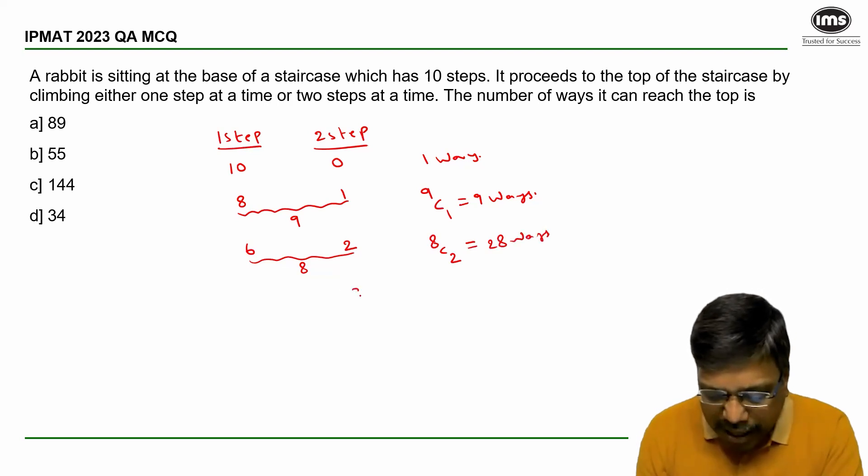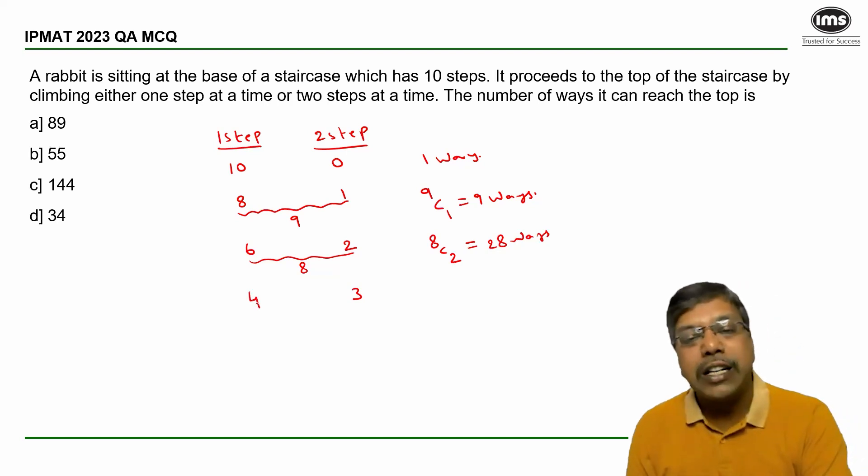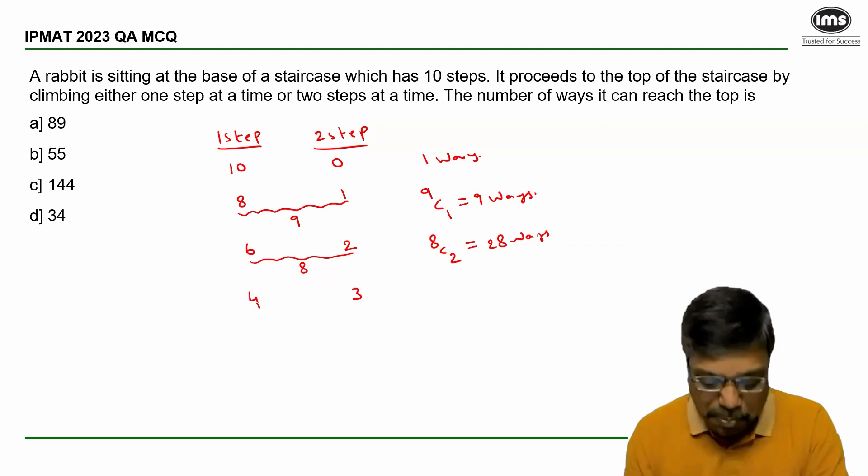Suppose it makes three jumps of double steps. Three times two equals six steps covered, and the remaining four jumps are single step. So a total of seven jumps. Number of ways of selecting three jumps